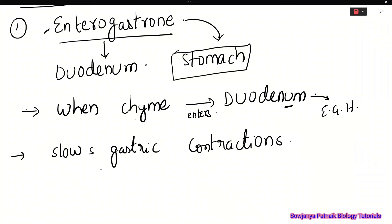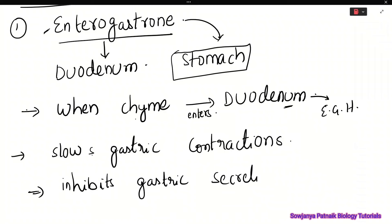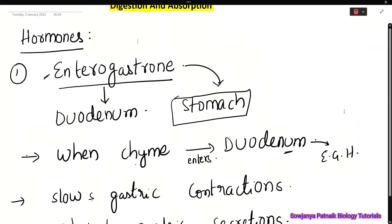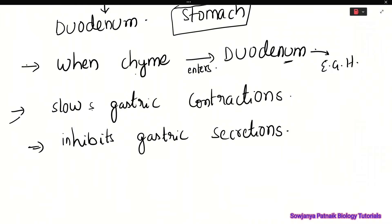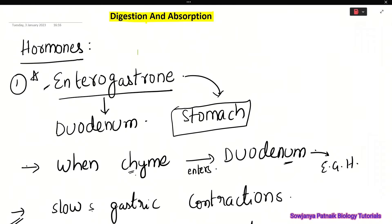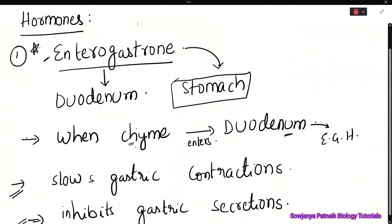The function of enterogastron hormone is: first, it slows down gastric contractions; second, it inhibits gastric secretions. So these are the two main functions of enterogastron. It is released whenever chyme enters into the duodenum and stimulates it.